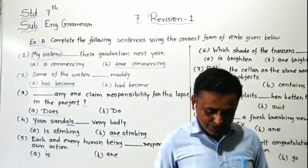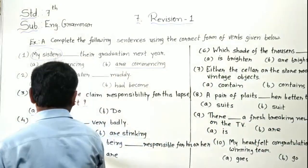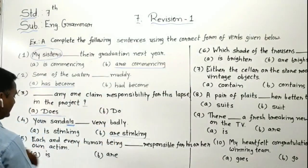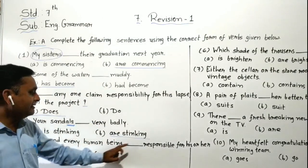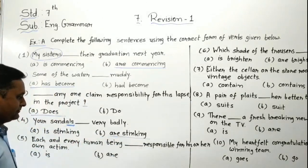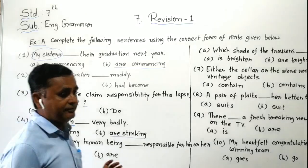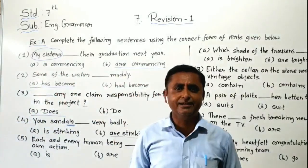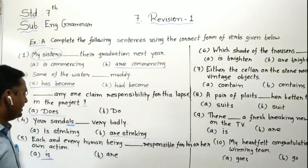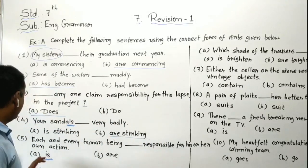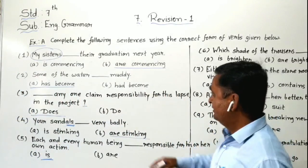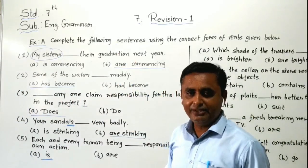Next, fifth blank: 'Each and every human being, blank, responsible for his or her own action.' Each and every human being — we are talking about each person's action. Each person is singular. So the correct answer is 'is.' Each and every human being is responsible for his or her own action. We have now completed five blanks.